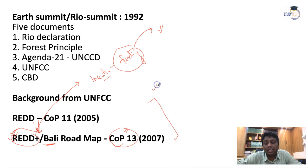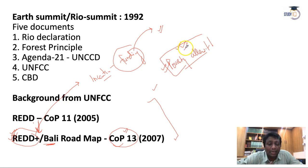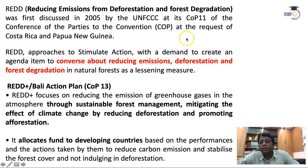Under REDD+, poverty alleviation is also a key component. When you remove poverty in rural areas, people stop burning wood and shift toward LPG use. So reducing poverty helps maintain a sustainable environment. REDD+ also includes the Bali Roadmap, which formalized Joint Implementation (JI), Clean Development Mechanism (CDM), and Carbon Trading. Poverty alleviation under REDD+ was a UPSC prelims question in 2015.